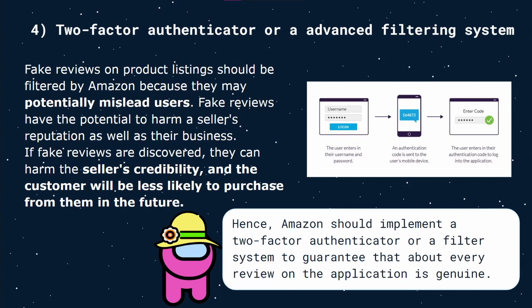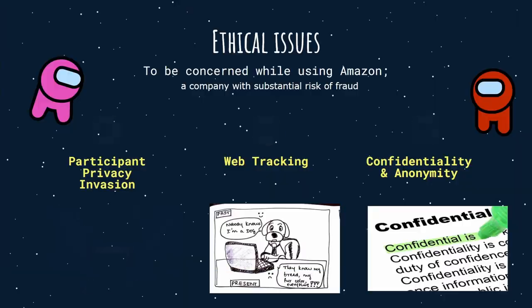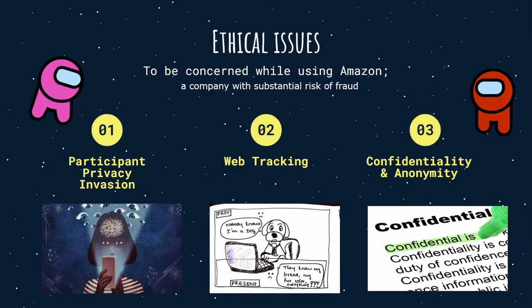Fake reviews on product listings should be filtered because they can potentially mislead users. Fake reviews can harm a seller's reputation and their business — if discovered, they damage credibility and customers will be less likely to purchase from them. Amazon should implement a two-factor authenticator or filter system to guarantee that every review is genuine. There are also many ethical issues users should be concerned with, as Amazon carries a substantial risk of fraud.